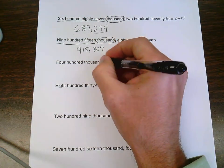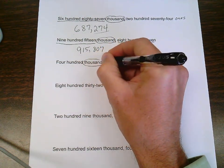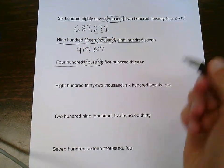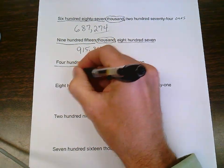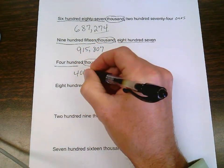Look at the word in front of the comma, thousand, and that 400 is going to be in the thousand period. 400, comma.